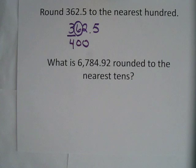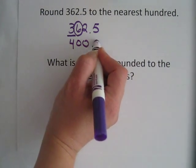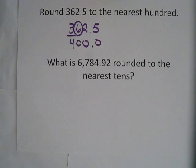Everything after it becomes 0s. So our rounded answer is 400. If you wanted to have decimal point 0, you could, but it's really not necessary. It doesn't change the value. But you have to have these 0s because they are placeholders. So our answer is 400.